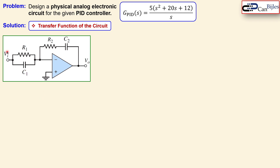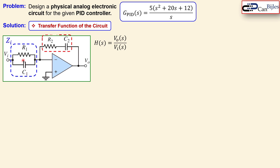Vi and Vo are the Laplace domain parameters. The transfer function is the output divided by the input in the S-domain. Using impedances, the transfer function can be written in the inverting amplifier format: minus the feedback impedance Zf divided by the input impedance Zi. We now want to calculate the expressions for Zf and Zi.